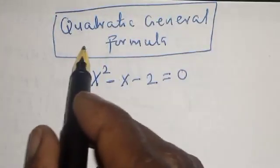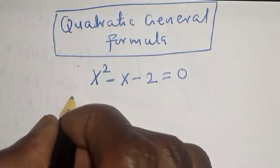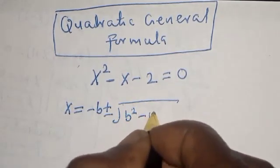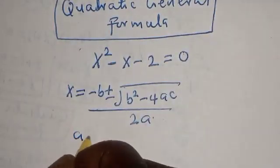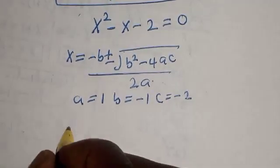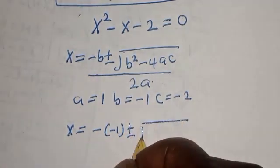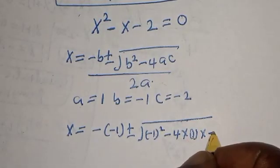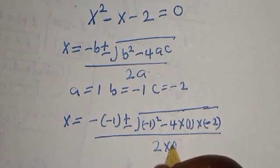Now let's solve using the quadratic general formula. The equation is s squared minus s minus 2 equals 0. The quadratic formula is: s equals minus b plus or minus square root of (b squared minus 4ac), over 2a. From our equation, a equals 1, b equals minus 1, and c equals minus 2. Substituting: s equals minus(minus 1) plus or minus square root of (minus 1 squared minus 4 times 1 times minus 2), over 2 times 1.